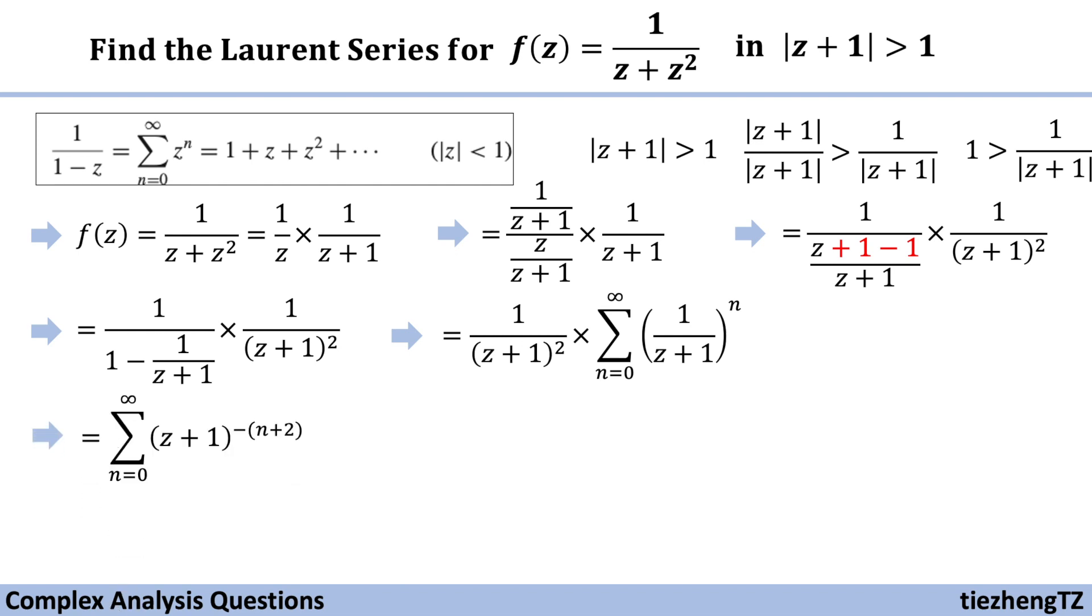And of course, we can just move the 1 over z plus 1 square to the sum, which becomes sum, n starts from 0 to infinite, z plus 1 to the power of minus n plus 2. We can stop here.